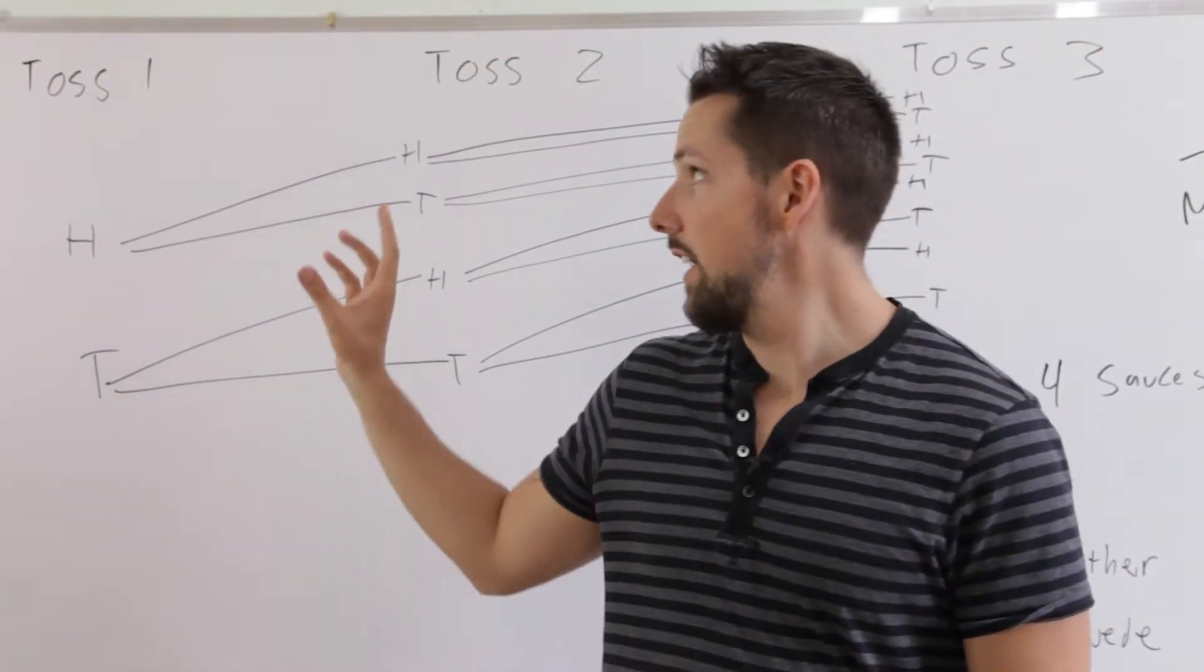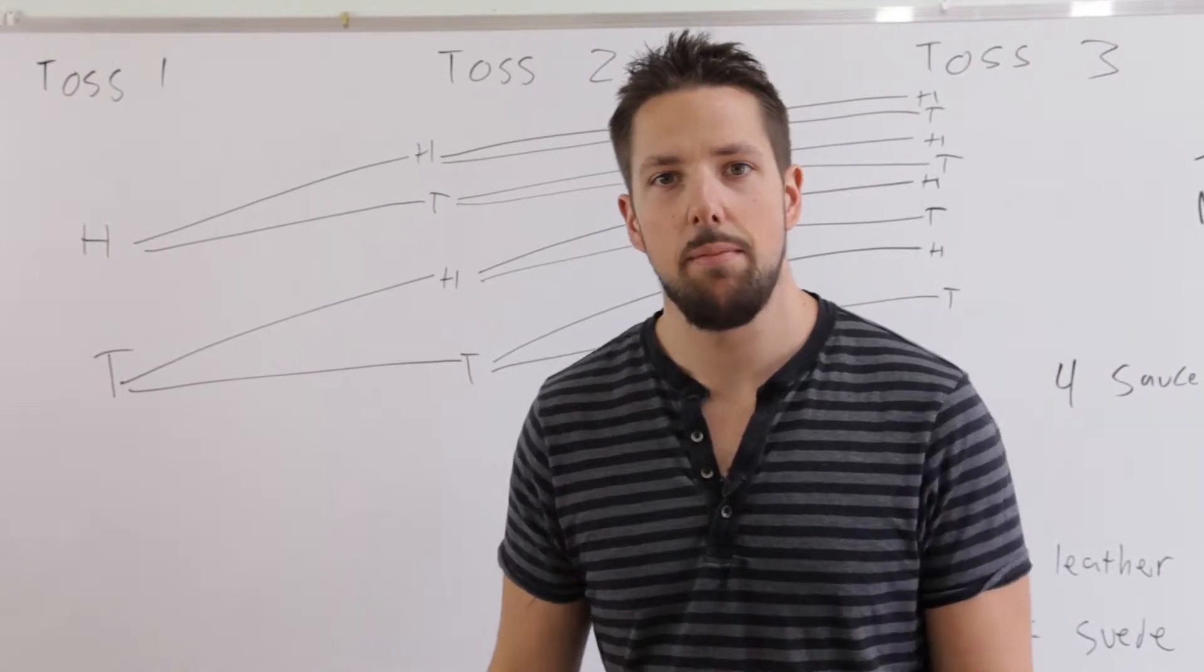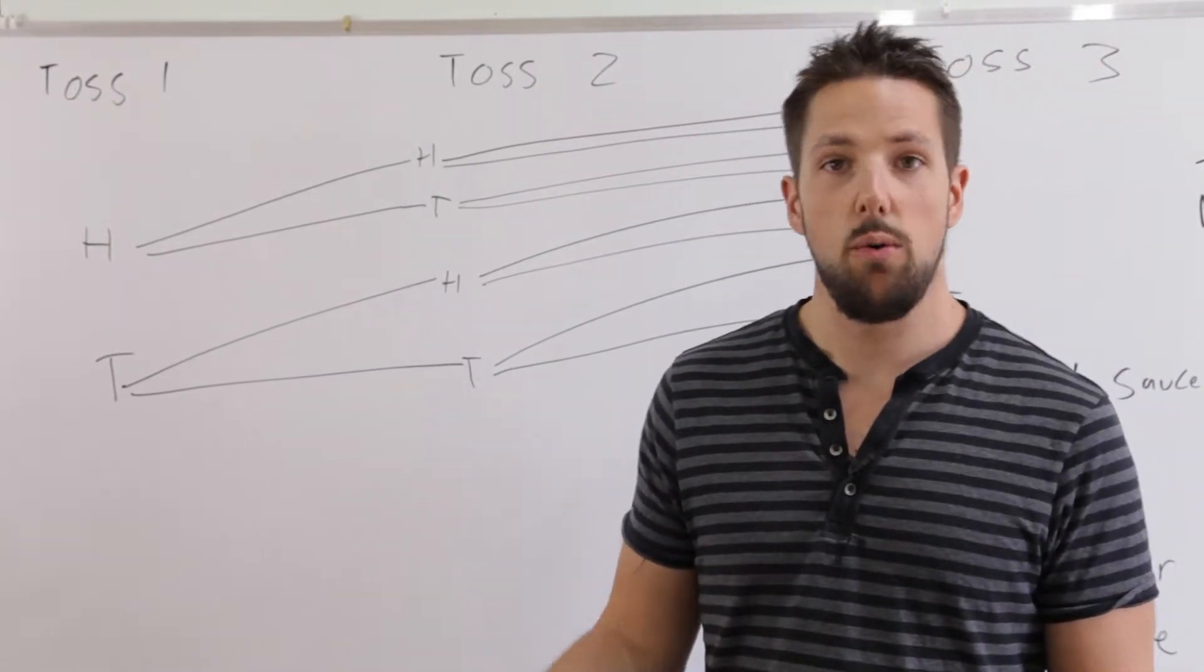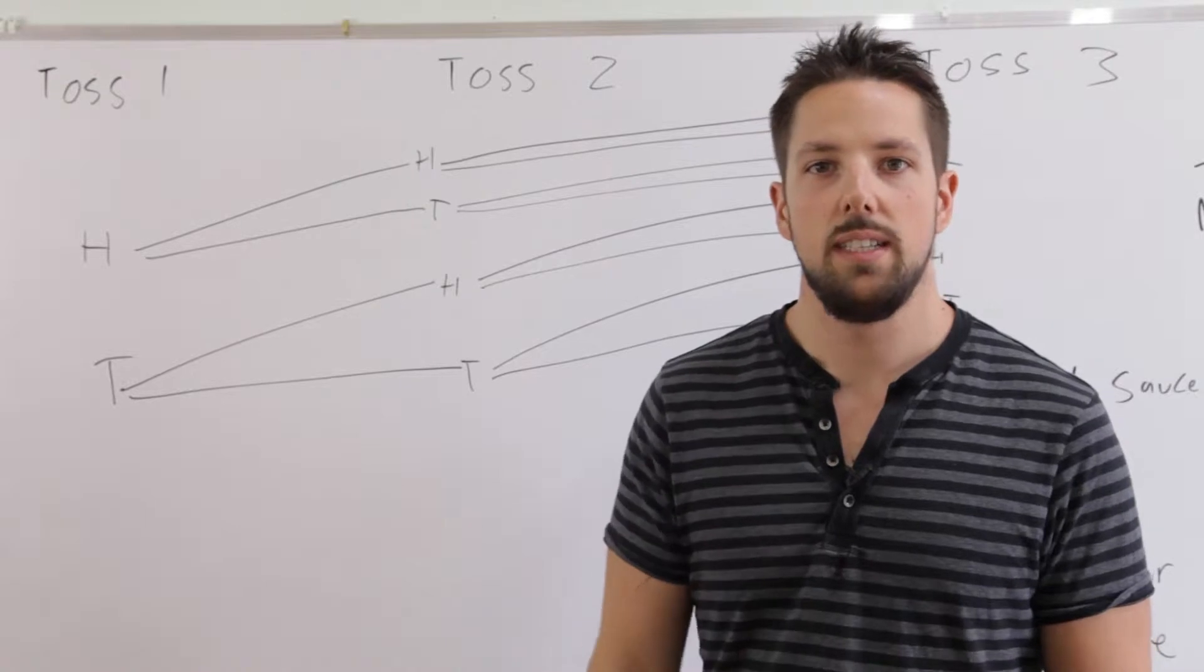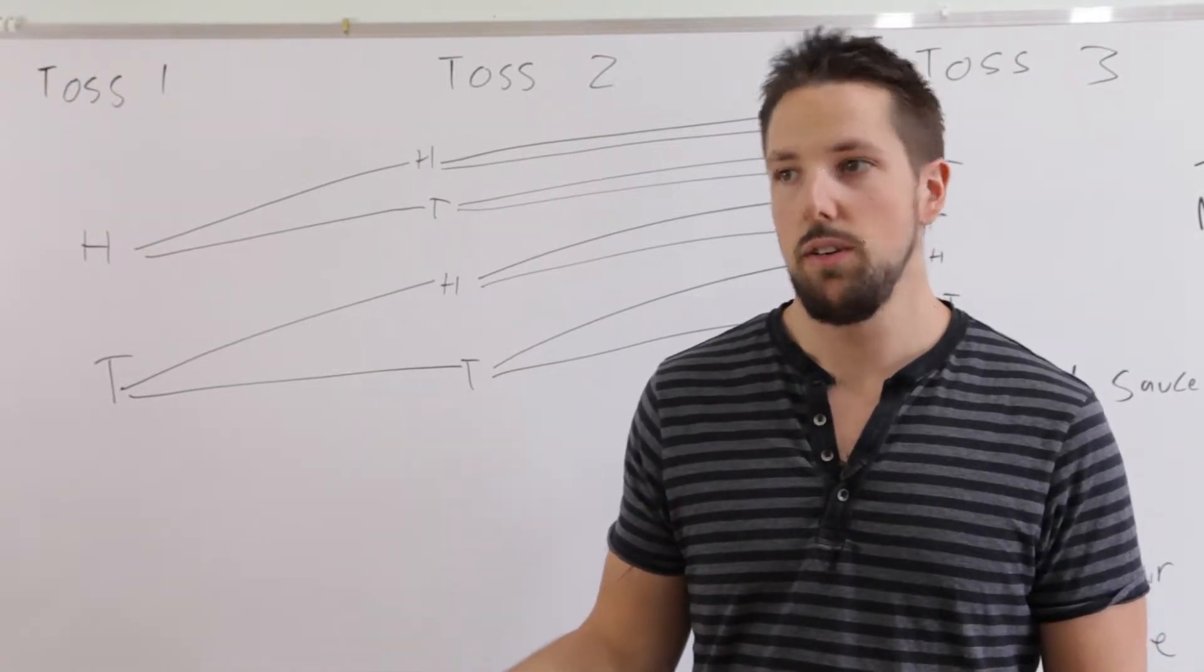So we're going to start with a tree diagram. I'll give you an example. Say we're tossing a coin three times and we were recording all the outcomes. What are all the different possible outcomes we could get?